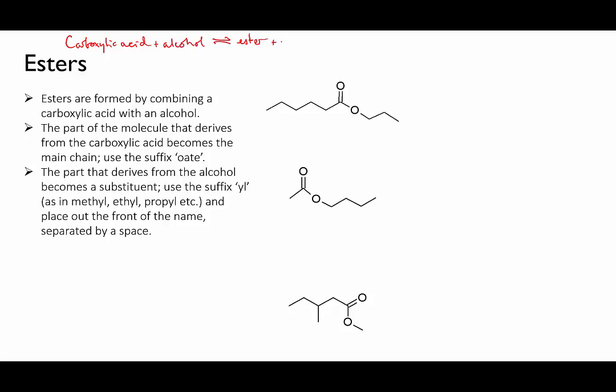Here's how this first ester would be made. You would react hexanoic acid with propan-1-ol and they would join together to get this molecule. The part on the left, the part that's directly attached to the carbonyl group, came from the carboxylic acid. And the other part used to be the alcohol.